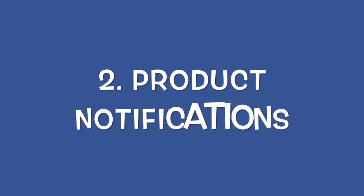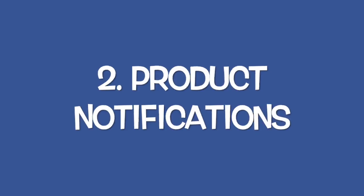Product Notifications: Oberlo keeps track of changes made to products such as price, inventory, and availability almost in real time. You can manually review these changes and update on a per-product basis, or you can configure Oberlo to make changes to the relevant product automatically.